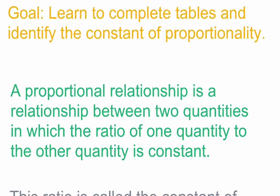A proportional relationship can be defined as a relationship between two quantities in which the ratio of one quantity to the other quantity is constant. It's always going to be constant. If it is not constant, then it is not a proportional relationship.